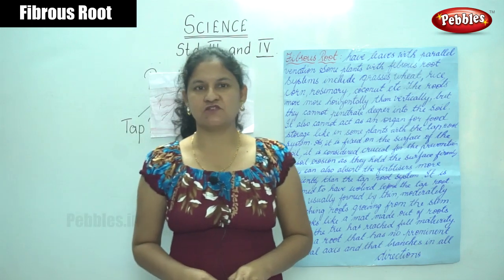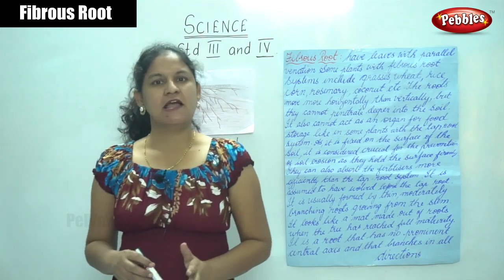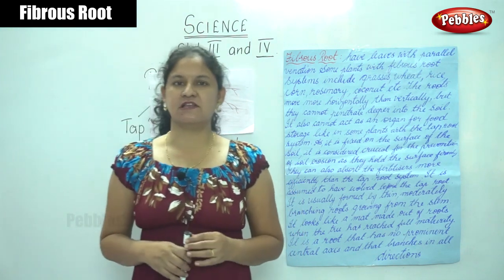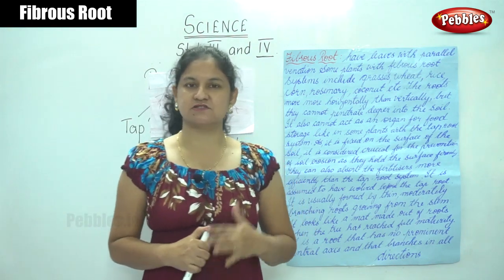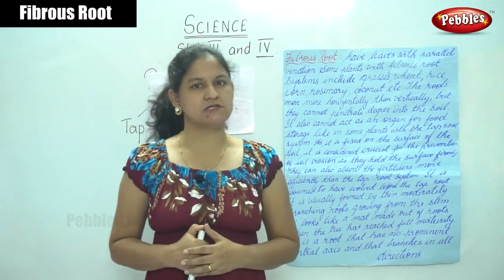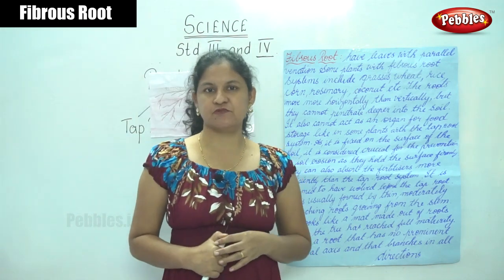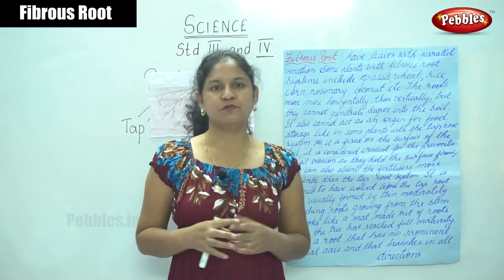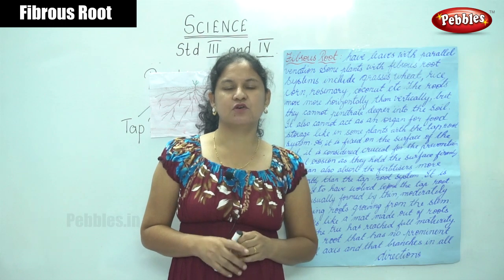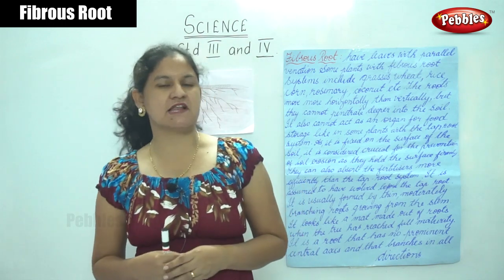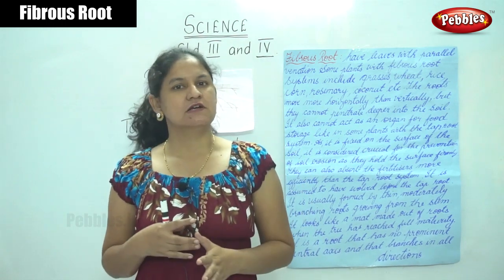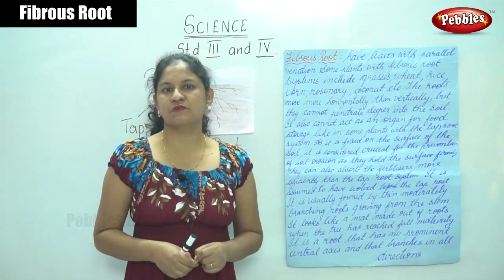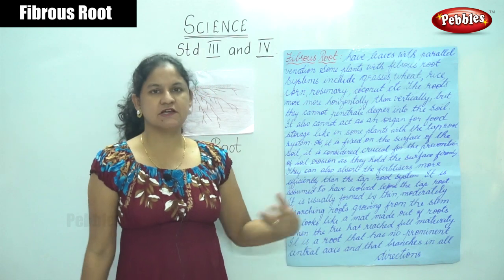We've seen the main functions of the root — that is absorption, anchoring of the plant, and providing the necessary water and minerals to the other parts of the plant. We've seen the two types of root: the tap root and the fibrous root. Tap roots are also known as edible tap roots because we have vegetables like carrot, beetroot, coriander, and parsley.